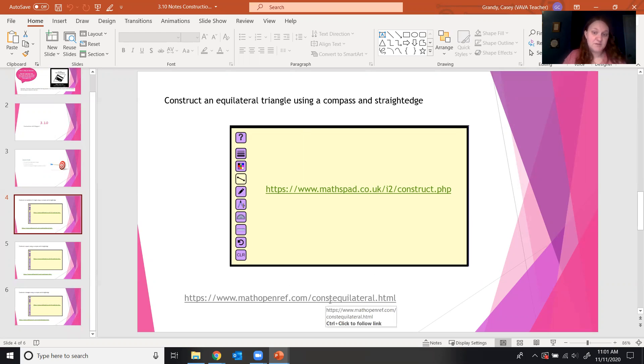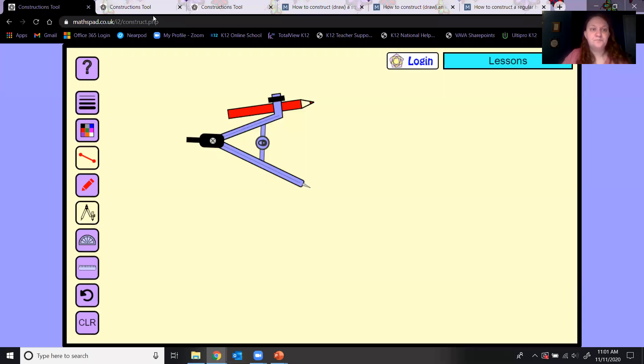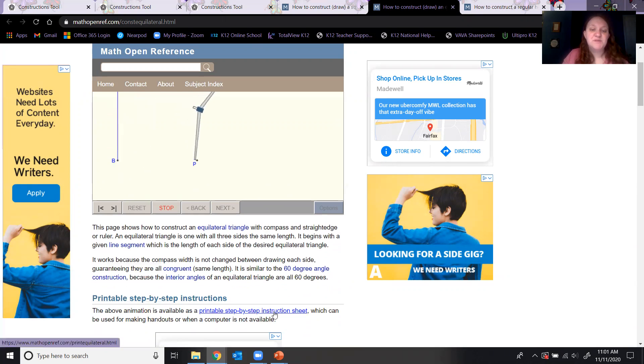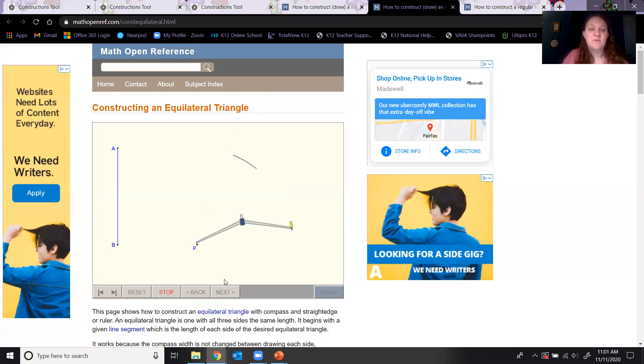We're going to start with the construction of an equilateral triangle. If you click on that link, it will take you to this page. If you click run, you can follow the steps one by one, or you can click on the printable instructions. I'll show you how I do it, which is pretty much how they're doing it here.